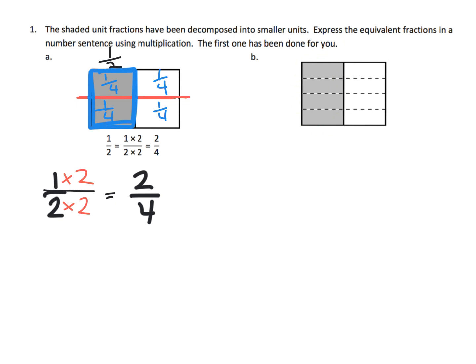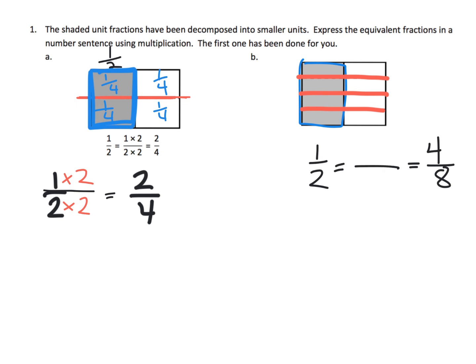We can see we begin right here with one half. But then we can see that we cut horizontally, and now all of a sudden, instead of having one half, we now have four eighths. The connection is: one times four is four, and two times four is eight. So there's our connection — one half is equivalent to four eighths, because both the numerator and the denominator are being multiplied by the same thing.